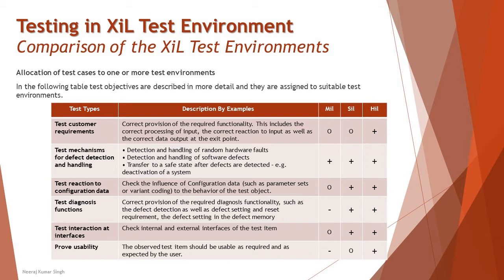The first test type is testing customer requirements, which is about business requirements meeting customer specifications from the very beginning. The description covers correct provisions of the required functionality — including correct processing of input, correct reaction to input, and correct data output at the exit point. This addresses user and customer expectations to ensure everything is met as expected.